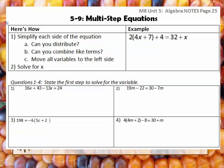Let's look at this example together. We know it's an equation, so we're going to draw our line down the middle. We ask ourselves first: can I distribute? Well, right here I have the distributive property, so I'm going to distribute. 2 times 4x gives me 8x, and 2 times a positive 7 gives me positive 14. Then 13 plus 4, and equals 32 plus x on the other side. I've done the distributive property.